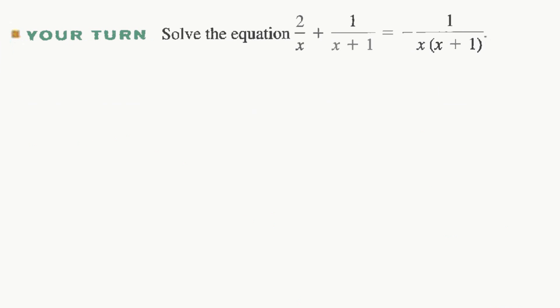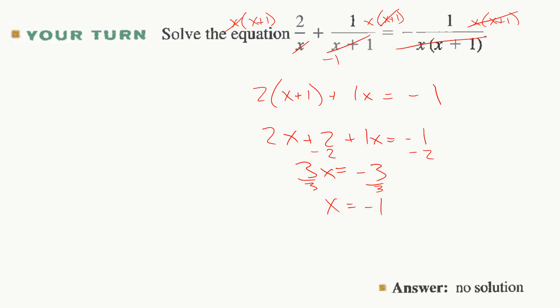Give it a shot. All right, this is already factored. Our LCD is x times x plus 1. Cancel where you can. So we're left with 2 times x plus 1 plus 1 times x equals negative 1. Clean it up. 2x plus 2 plus 1x equals negative 1. We have 3x minus 2 will be negative 3. x is negative 1 divided by 3. And so if we plug it back in, can x be negative 1? No. So we have no solution.